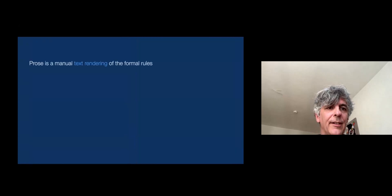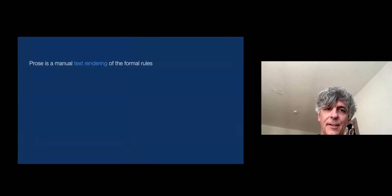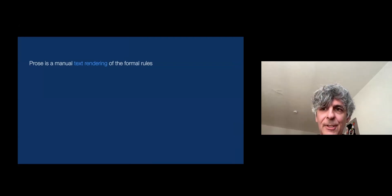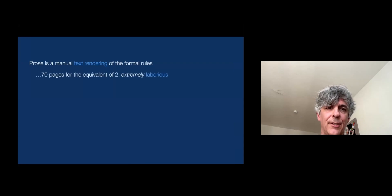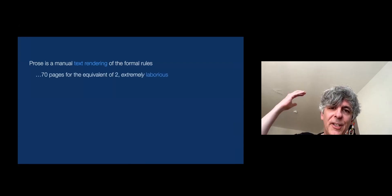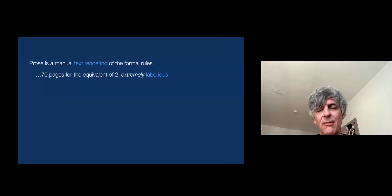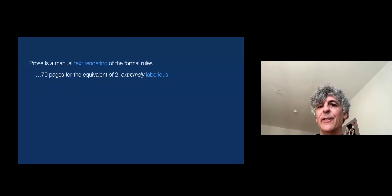The prose is really a manual text rendering of the formal rules — I manually translated all the formal rules into English. That blew up the equivalent of those two pages into roughly seven pages for the equivalent. And it was a very laborious process. We also had to use some version of markdown — more precisely restructured text — which has its own problems.